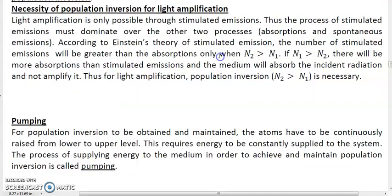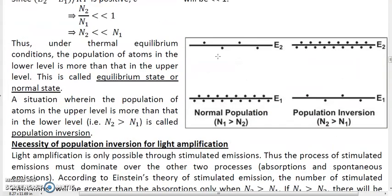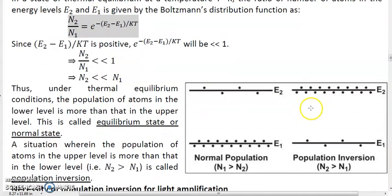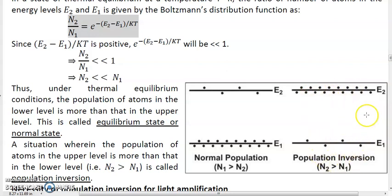In the previous lecture we talked about population inversion, which is a state wherein there are more atoms in the upper level than in the lower level — that is, n2 greater than n1. We have also seen why for laser this population inversion is absolutely necessary. Without achieving a state of population inversion, laser cannot occur.